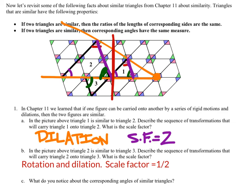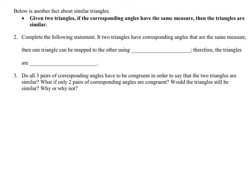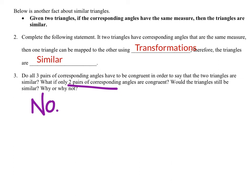What do you notice about the corresponding angles of similar triangles? They're all the same. Given two triangles, if the corresponding angles have the same measure then the triangles are similar — that's automatic. Do all three pairs of corresponding angles have to be congruent to say the triangles are similar? The answer is a big fat no — because if only two corresponding angles are congruent, then automatically the third pair is congruent too, which makes them similar.